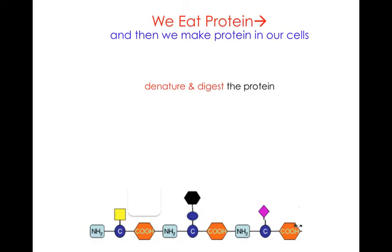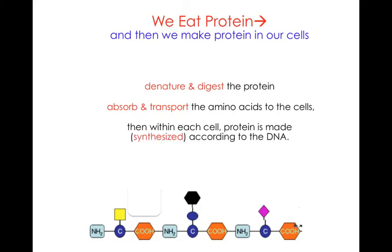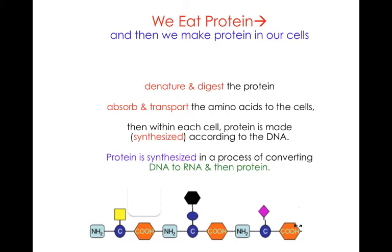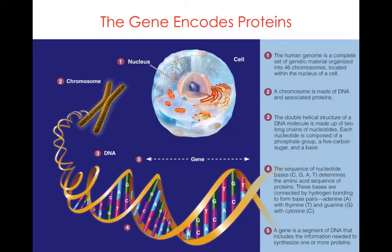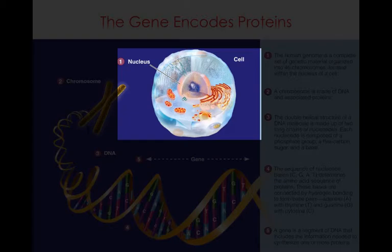We eat protein, and then we make protein in our cells. After the protein has been denatured and digested, and after the amino acids have been absorbed and transported to the cells, a new protein is made — or synthesized — according to the program in the DNA in the nucleus of the cell. This protein is synthesized in a process of converting DNA into RNA and then into protein. It's the genes inside the chromosomes of our cell that tell the body what type of proteins to make. The human genome is a complete set of genetic material organized into 46 chromosomes located within the nucleus of the cell.